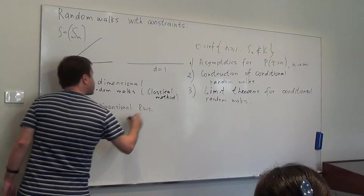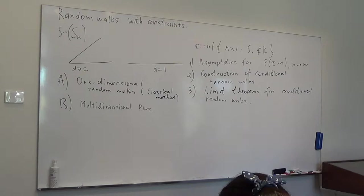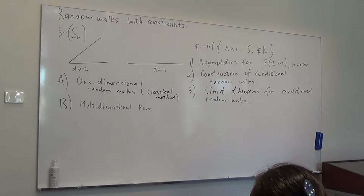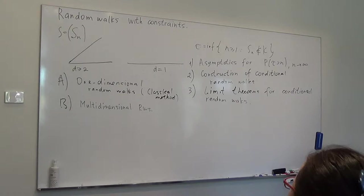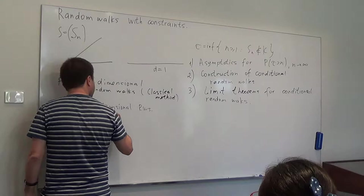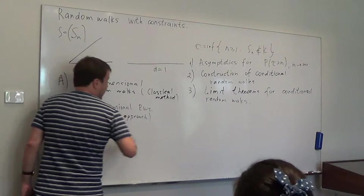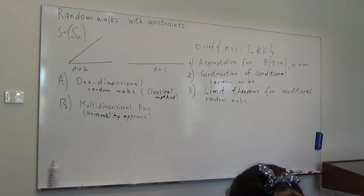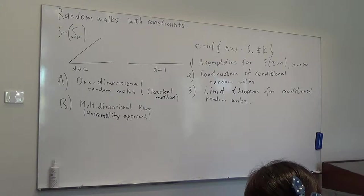In the multi-dimensional case we will have a problem: the classical methods are no longer available. The Wiener-Hopf factorization is a really powerful thing, but it works only in one dimension — you can do something in higher dimensions but only for very limited domains. What I will try to do is explain how you can use the universality approach, which basically means making use of the fact that a random walk converges to Brownian motion, and then using the results obtained for Brownian motion to prove something for the random walk. That's what I call universality.